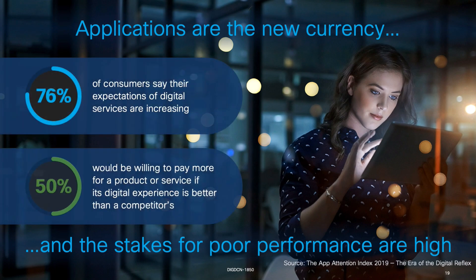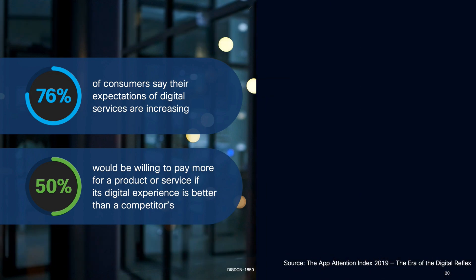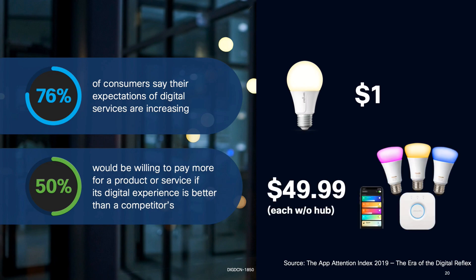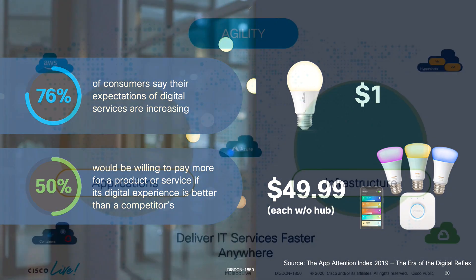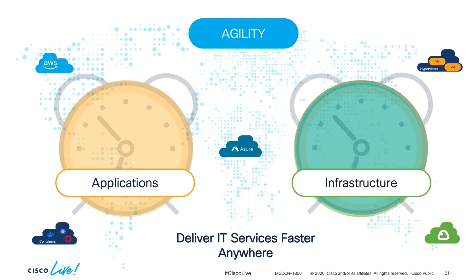Many of us are even willing to pay more for a product or service if it improves our experience. Just think about smart light bulbs — I could get a regular light bulb for a dollar, but having the experience of turning the lights of my house on and off, or even changing their color, may be the perfect excuse to spend $50 on a single bulb. That means I'm potentially willing to spend 50 times more on a light bulb just because of an application that improves my experience. So when talking about faster time to innovation, we need to focus on driving agility twofold: one for applications, and two for infrastructure services where those applications will be running on top of. Let's start by enabling agility for application delivery.